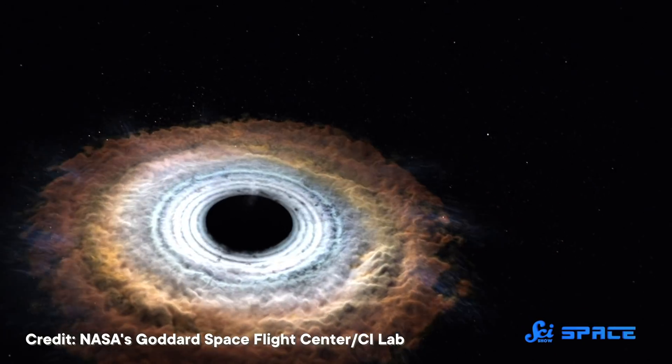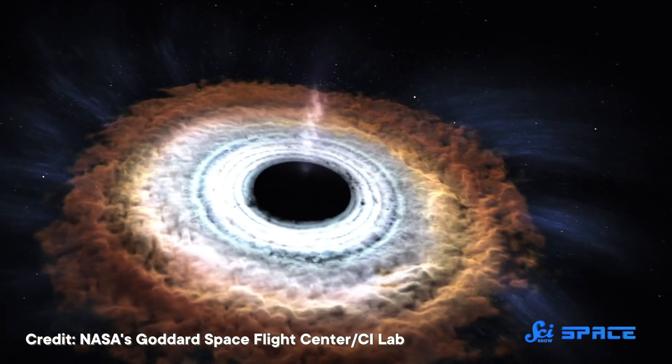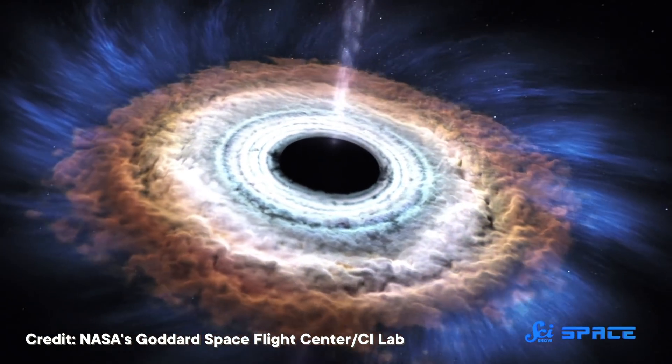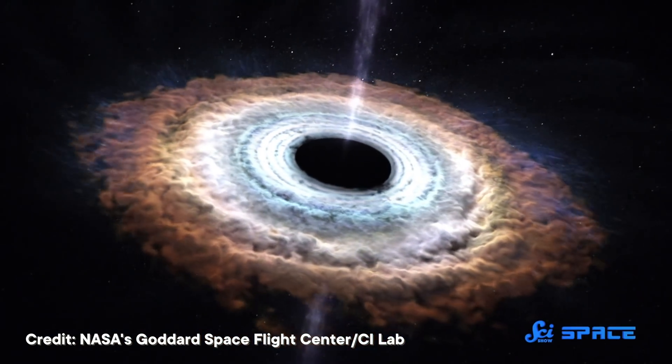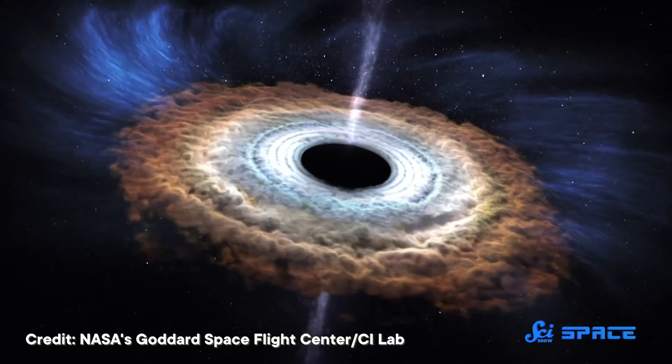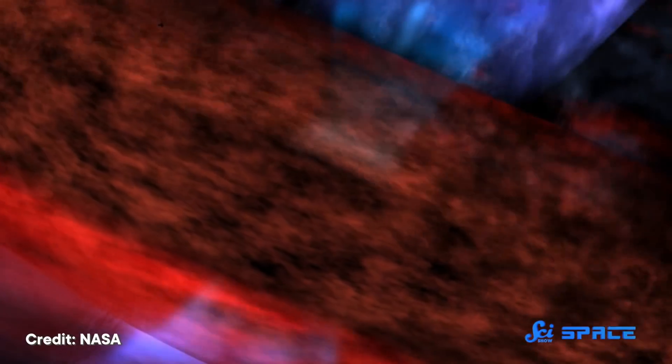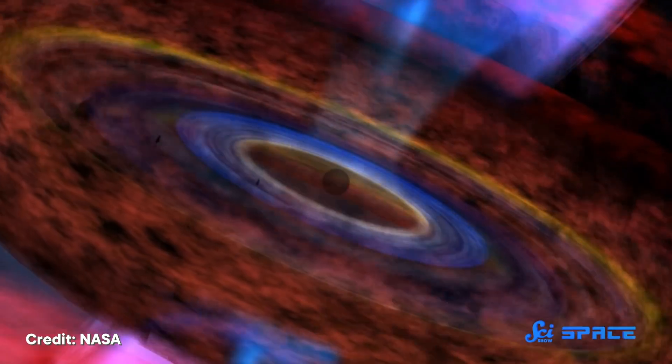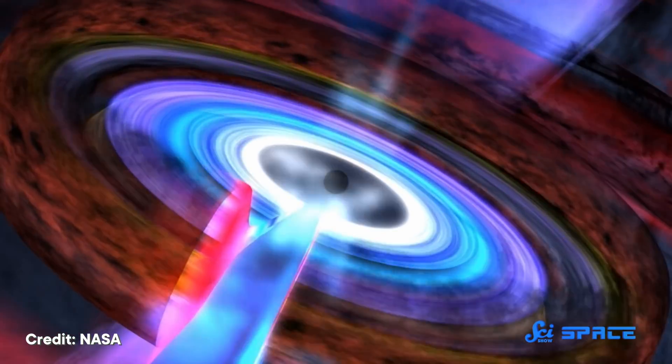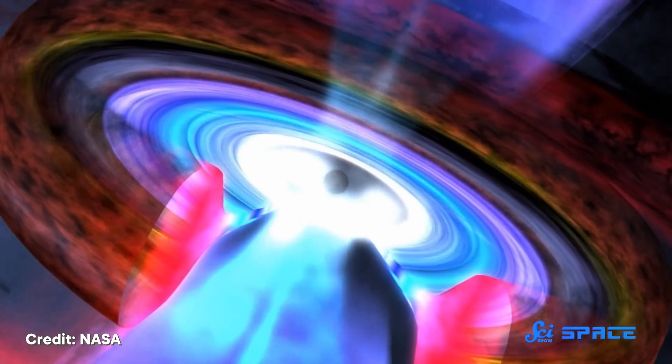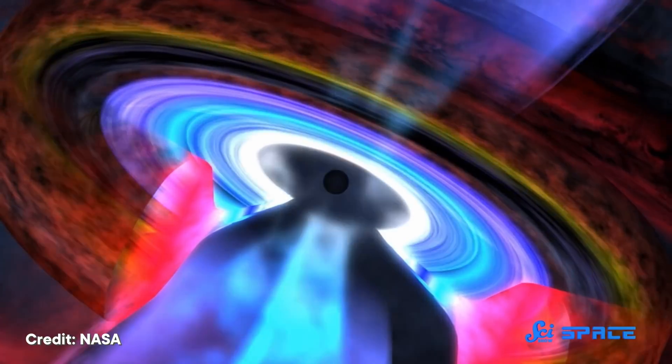A quasar is a type of active galactic nucleus, or AGN. To make one, you need a supermassive black hole at the heart of a galaxy that is actively slurping up matter around it. All that matter gets heated up through friction as it spirals down into the black hole, becoming so hot it starts to visibly glow.